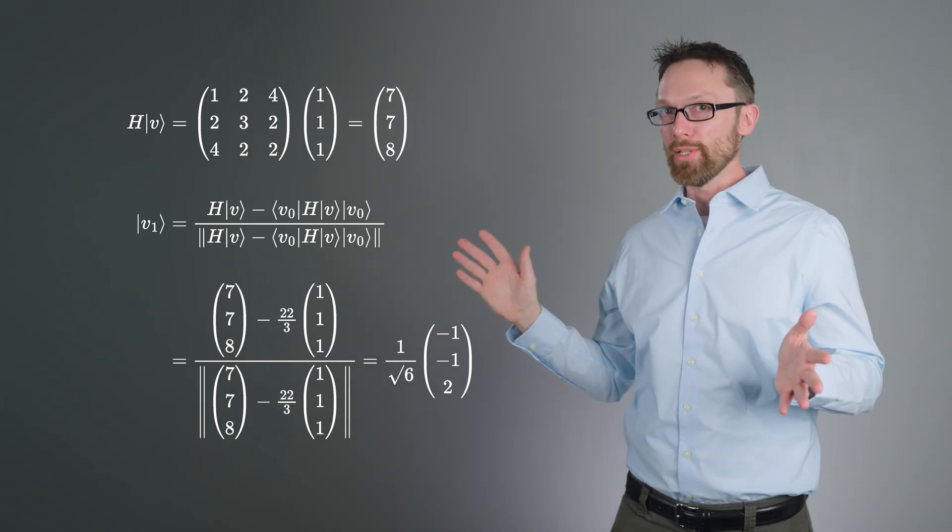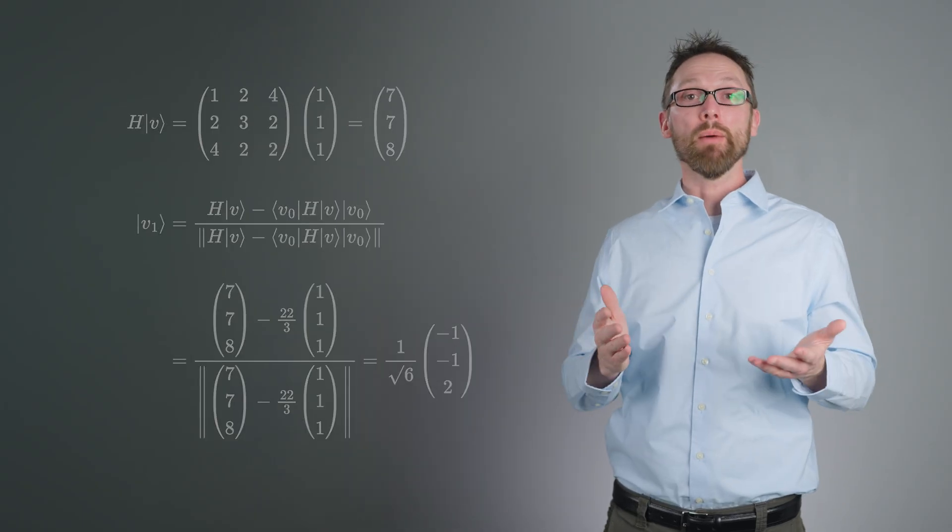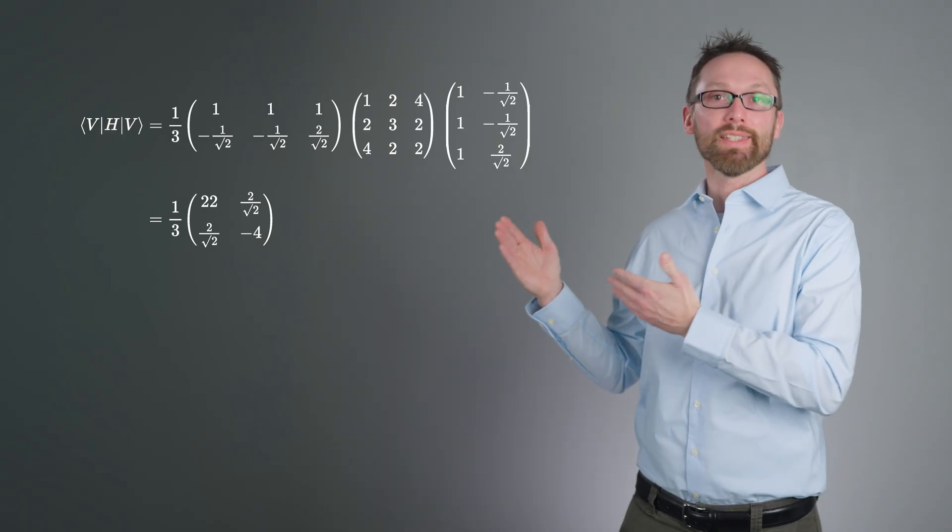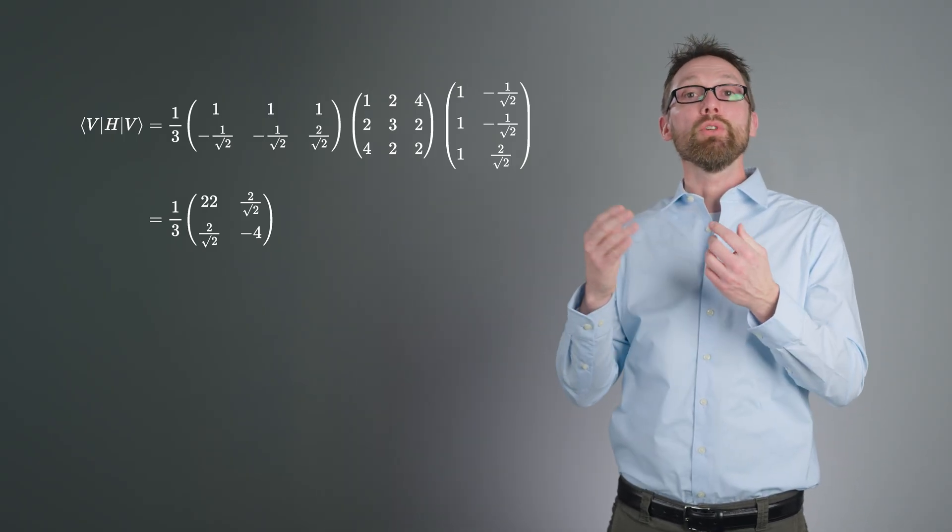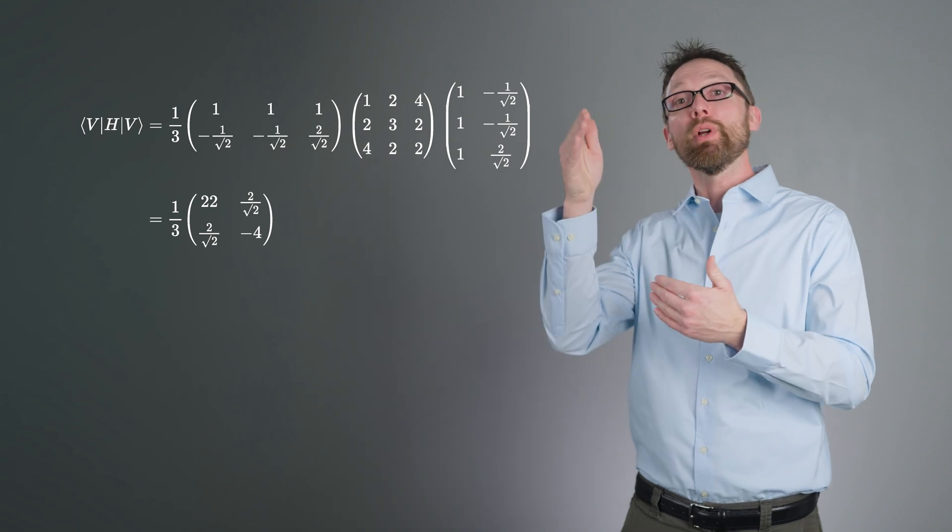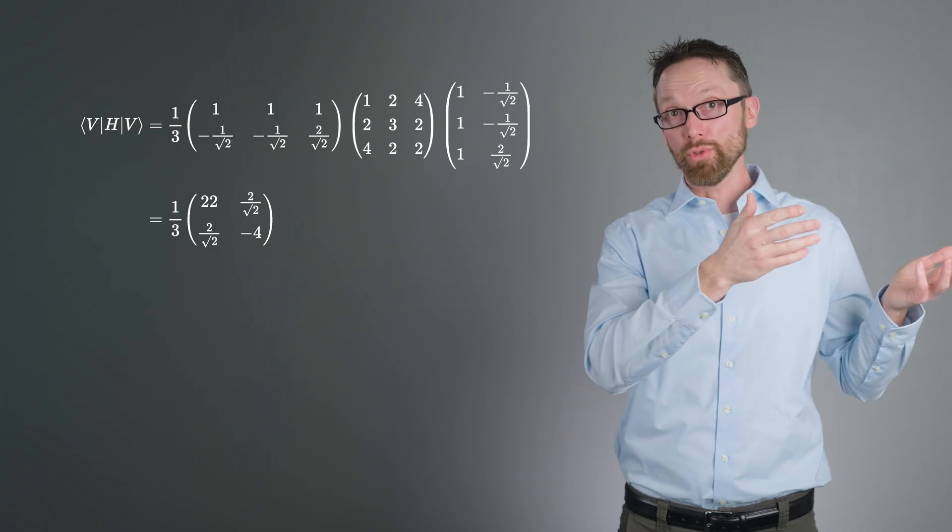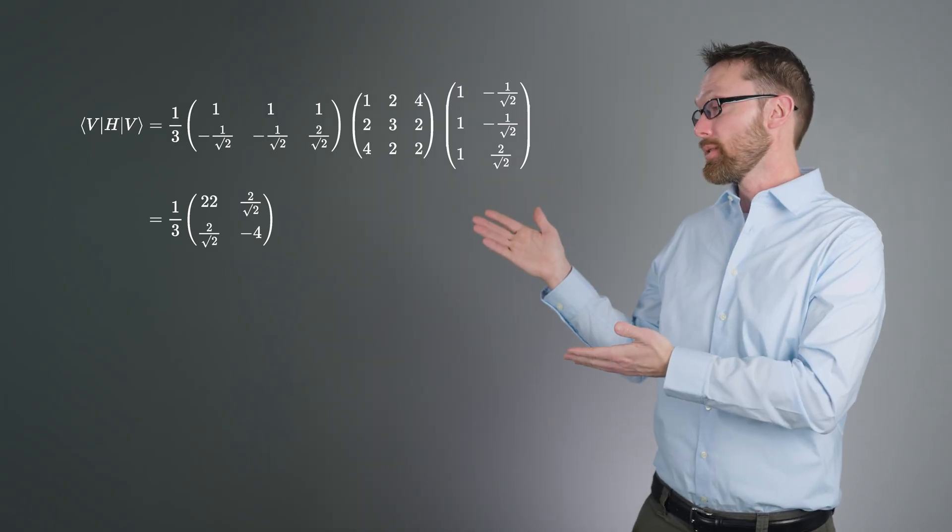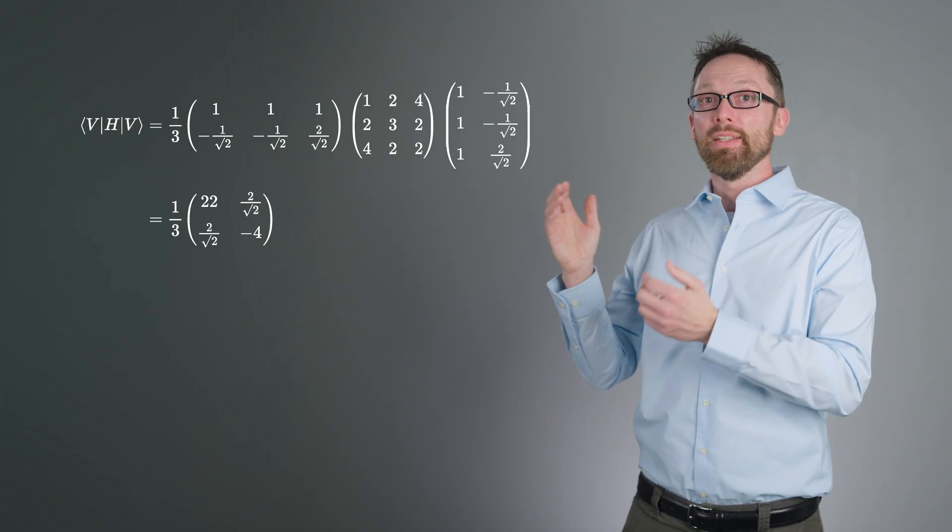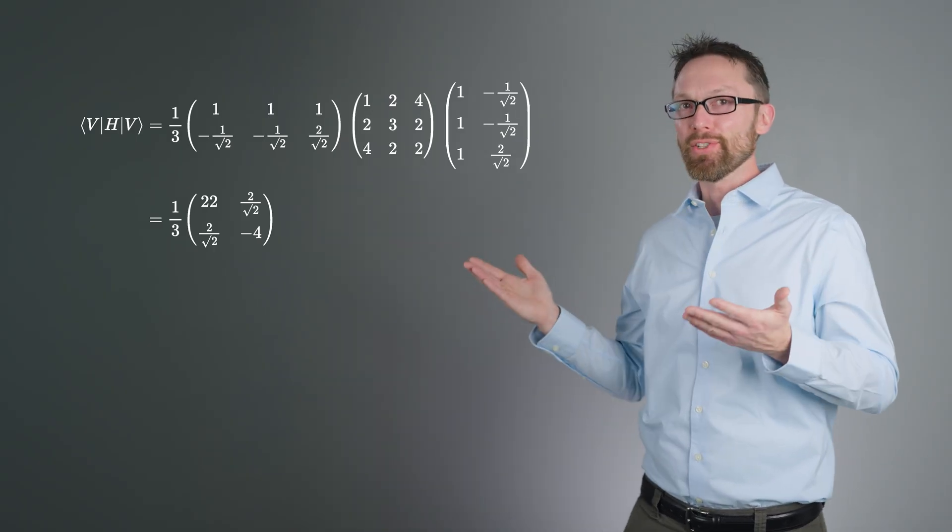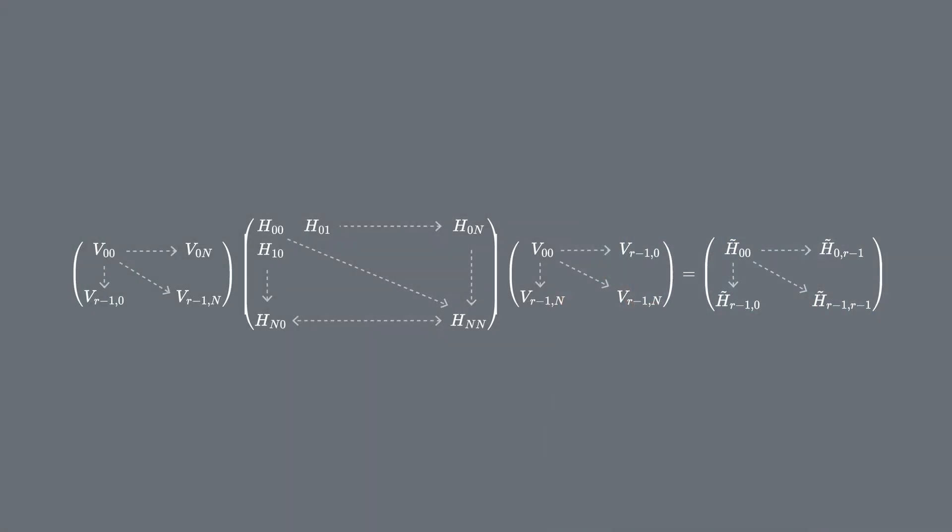This is not useful for such small matrices, and would not typically stop at a Krylov dimension of 2, but if we were to project H onto our new Krylov space K2, we would do this using a matrix V which has a Krylov vector for each column, and its transpose conjugate, which has Krylov vectors for rows. We would then obtain this matrix. This matrix technically has lower dimension than our original. Obviously, this reduction is not useful at this scale. This method is intended for reducing matrices with many thousands or even millions of rows and columns down to just a handful.